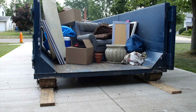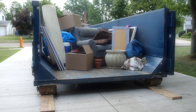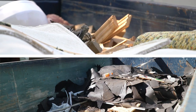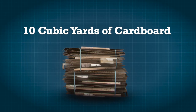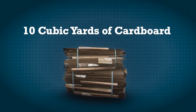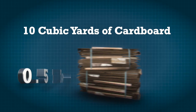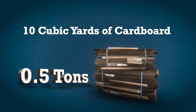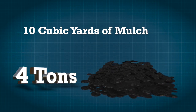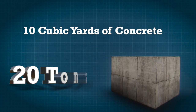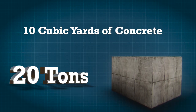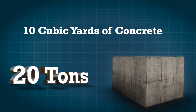Depending on what you're getting rid of, materials with the same volume could have very different weights. For example, 10 cubic yards of flattened cardboard weighs only 0.5 tons, while 10 cubic yards of mulch weighs about 4 tons. 10 cubic yards of a heavy material, like concrete, can weigh up to 20 tons.